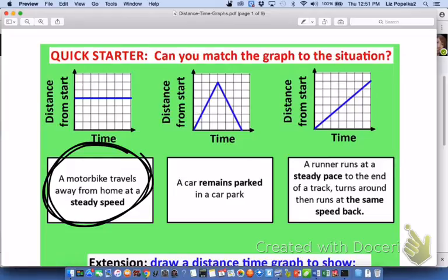Now I can pretty much eliminate this first one or the second one in the middle because my distance from start is going up but then coming back down, and this situation doesn't say anything about coming back home after you've gone out. So I'm gonna scratch out that one.